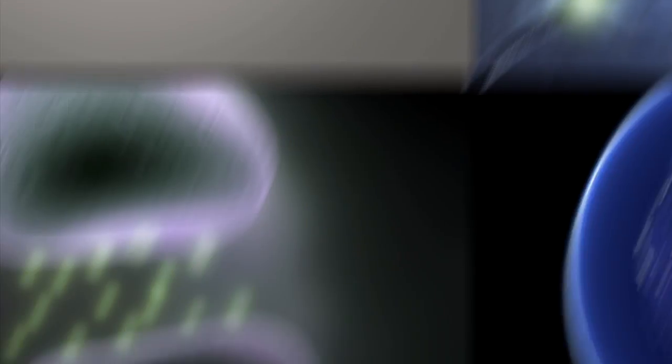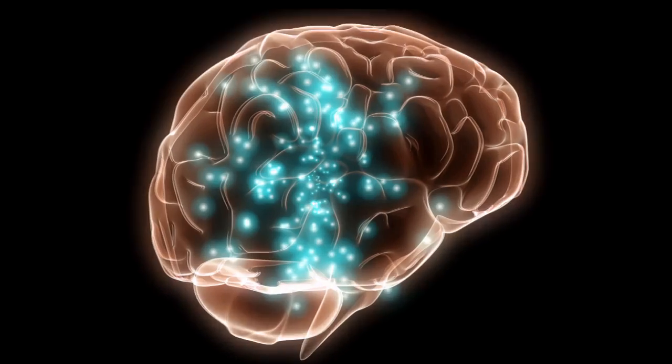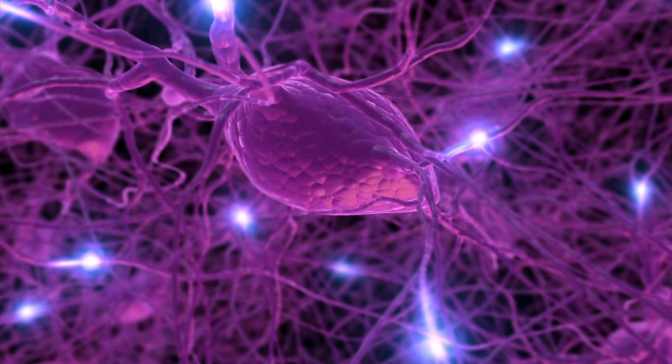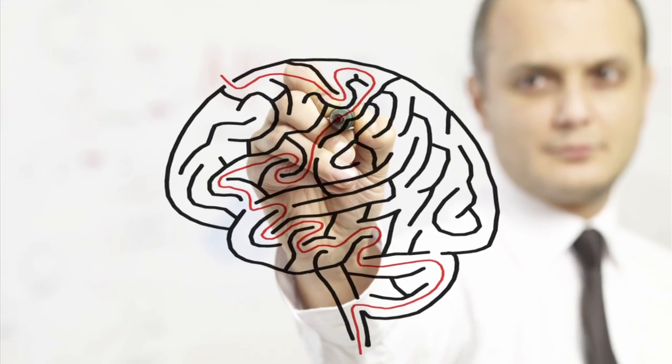But neuroscientists are quick to admit that these calculations may be off. For one thing, we're not sure how many synapses transmit at different strengths. Some could store several bits at a time. Others might process, instead of store, information. We don't yet know everything about how data is stored or moved throughout the brain.